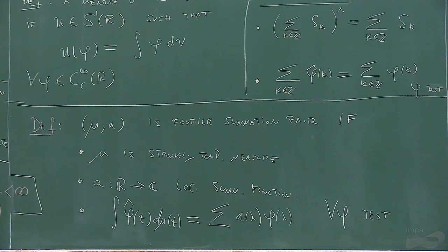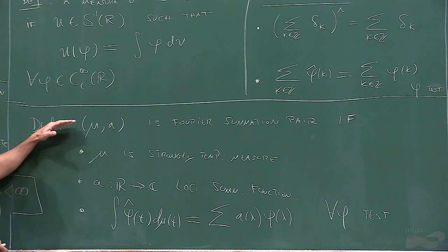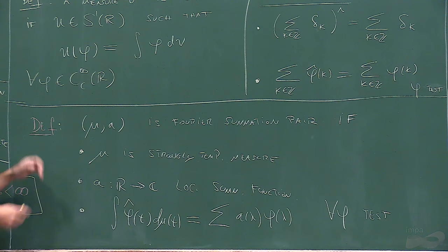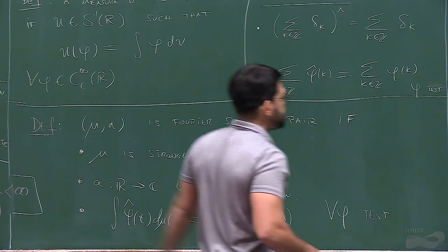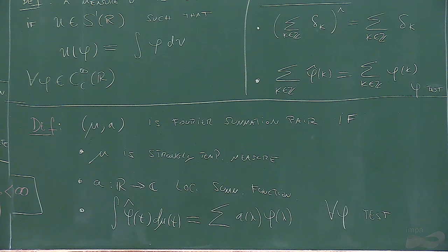The result I'm going to present classifies all Fourier summation pairs—anything of this type, completely. You have to assume that the degree of mu is bounded. I'm working on removing this condition, but if the measure is positive—which is the interesting case from the physics side—you can drop that condition anyway. Poisson summation is an example.